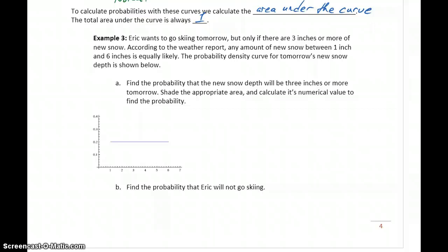We want to find the probability that the new snow depth will be 3 inches or more, meaning he'll go skiing tomorrow. We want to shade the appropriate area and then calculate its numerical value to find the probability.